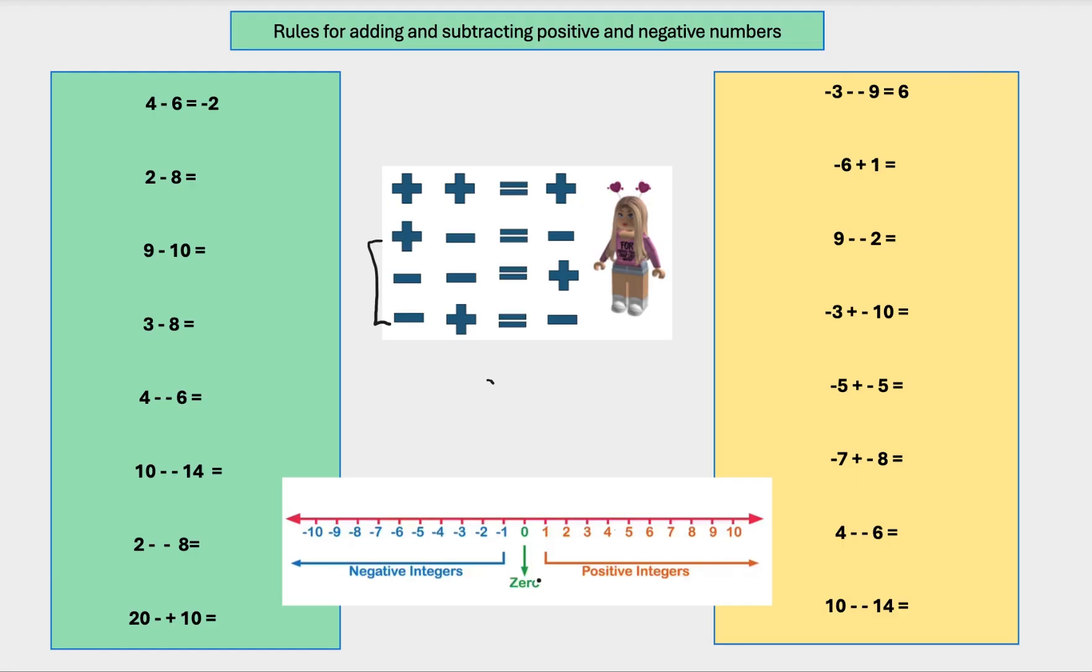Do the next one. 2, minus 8. Let's start at 2 because it's positive. And it wants us to minus 8. So we're going to go down that way. 1, 2, 3, 4, 5, 6, 7, 8. So our answer there is negative 7.